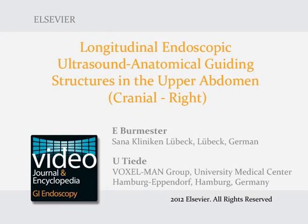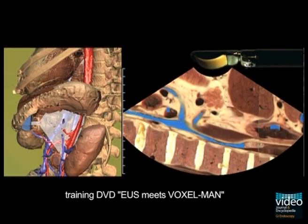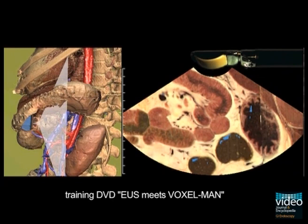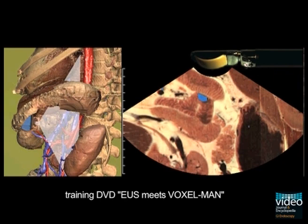The knowledge of normal ultrasound anatomy is the basis for orientation in endoscopic ultrasound. Therefore, the training of important anatomical landmarks is mandatory for each endosonographer. The main message of this video is how to find the anatomical guiding structures in the upper abdomen in longitudinal endoscopic ultrasound.